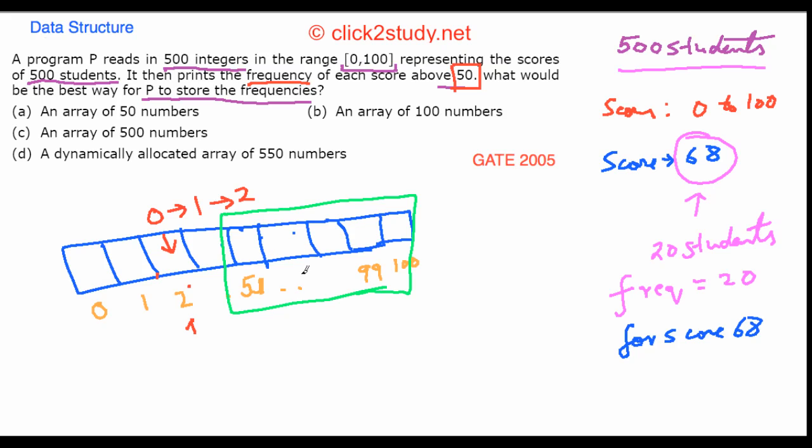You only need an array from index 51 to 100, which is an array of 50 numbers. That's all you need to store these values. You don't need the others because you only have to concentrate on scores above 50. And that's the idea behind this. Which means that this option is correct.